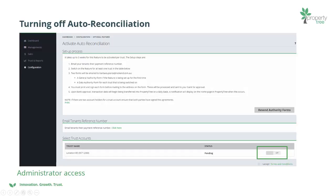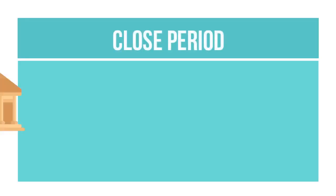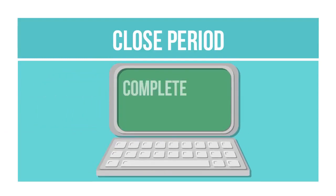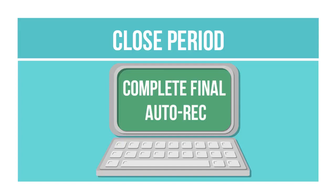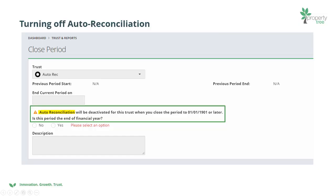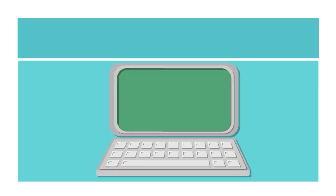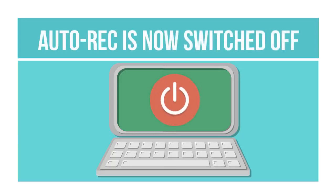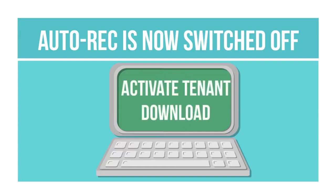Your auto rec is now in a pending state. On the day that you wish to close your period, wait for your bank feed to come in and go through the auto rec process for the final time using the last transaction files for that month. Then when you close your period, you will see a warning that you won't be able to open this period again. When you have closed your period, auto bank rec is turned off and you are free to activate the tenant download feature, starting afresh for the next period.